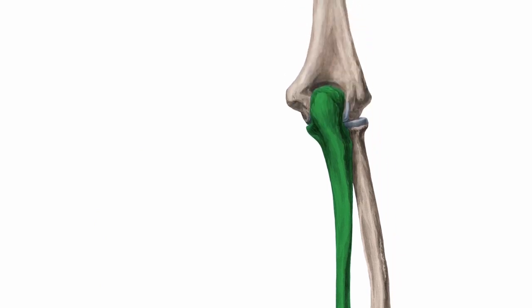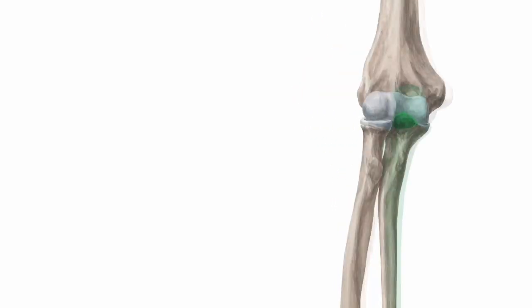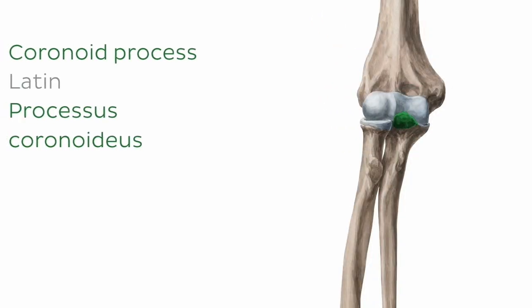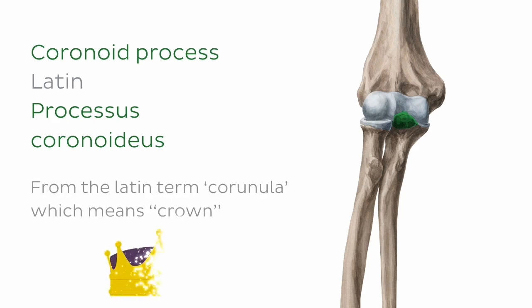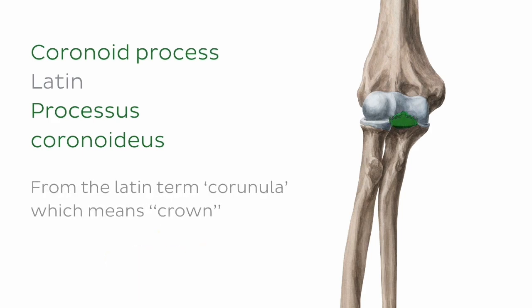Beginning once again on the proximal anterior aspect, we're going to start with this prominence just here, which is known as the coronoid process. The term coronoid is derived from the Latin word for crown, and as you can see in the illustration, this bony landmark has a crown-like or mitered appearance.